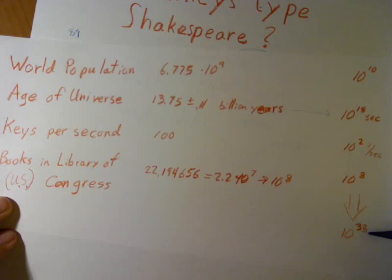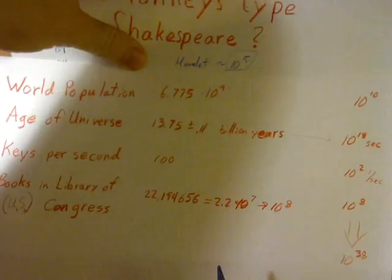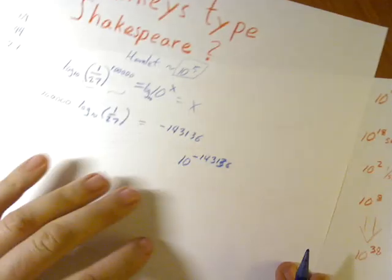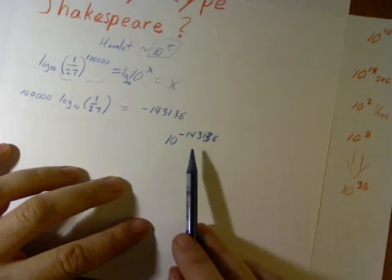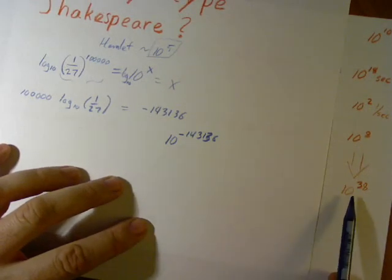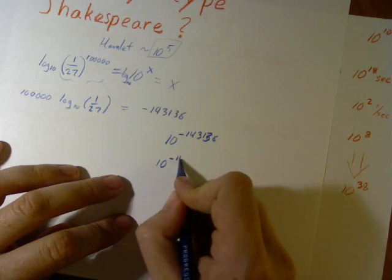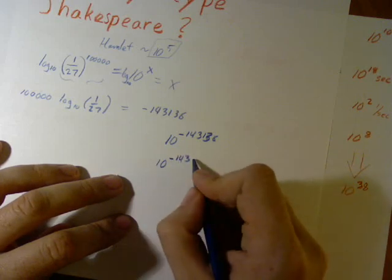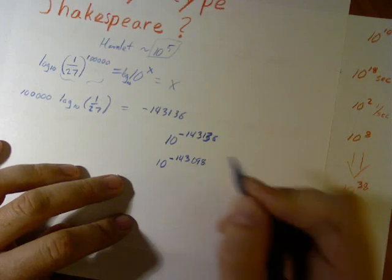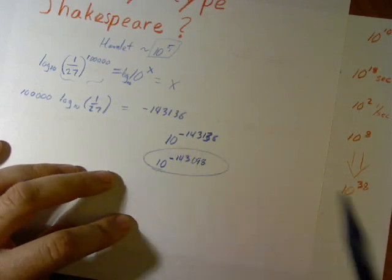How does that change our probability? Well, we multiply them. We multiply this times that. What's that give us? Well, 10 to the 143,098 is our new probability.